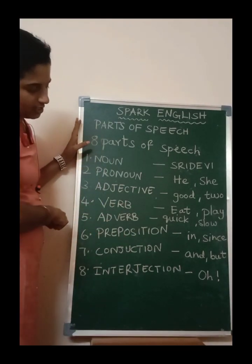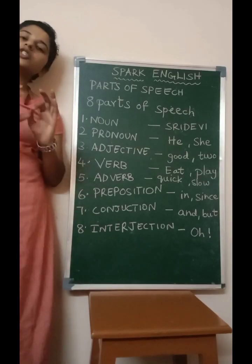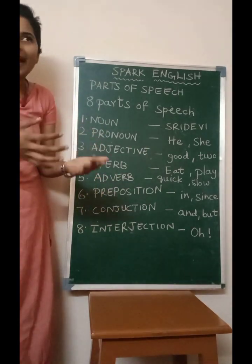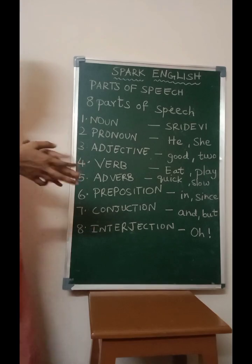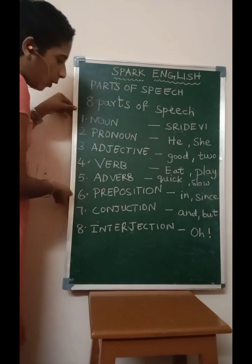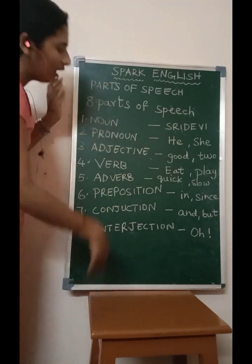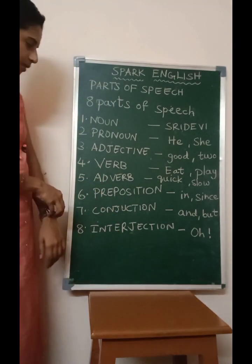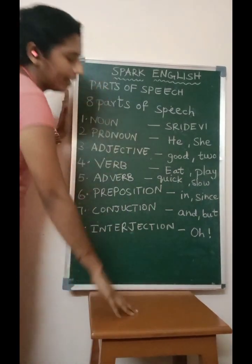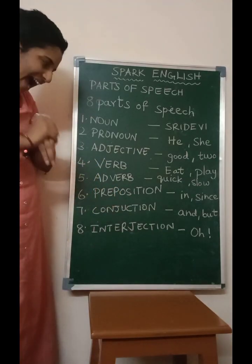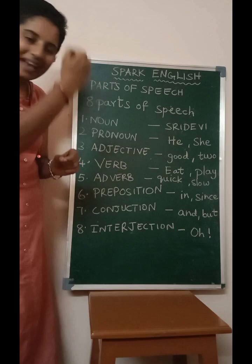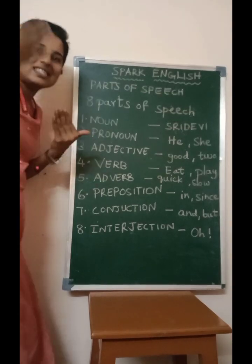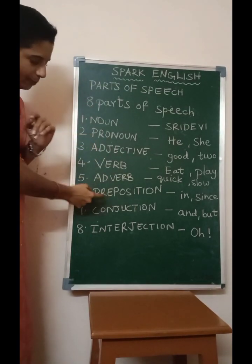And prepositions. A preposition is a word used with a noun or pronoun to show the relationship it denotes. For example, 'The board is on the table' — on is a preposition. 'Watch is on my hand.' 'Bangle is on my right hand.' Words like on, in — 'I love movies since childhood' — since is a preposition. That is preposition.